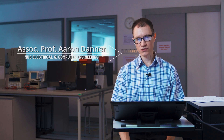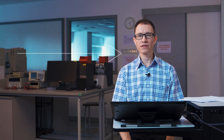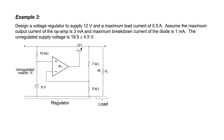In the last video we designed a voltage regulator, but in this video I want to talk more about what can go wrong with it. We're going to talk about overcurrent protection. Let's look back at the last example of the previous video. In that example we designed a voltage regulator that could supply 12 volts from a variable DC supply. Here's the design that we came up with.